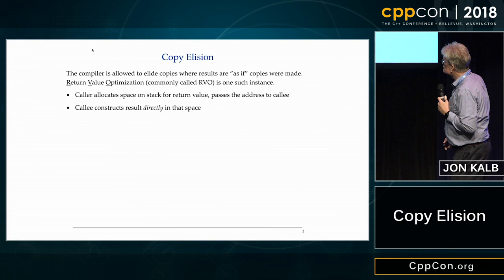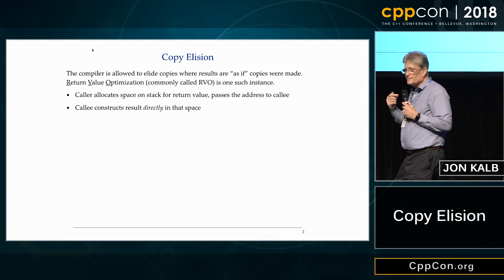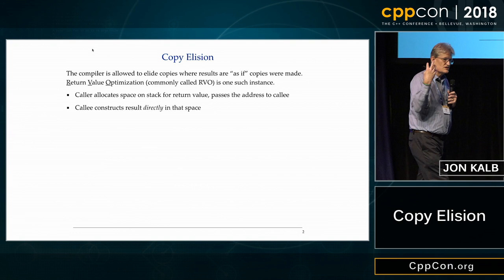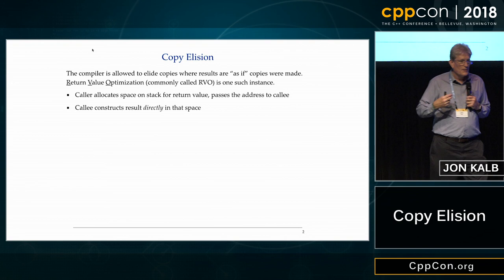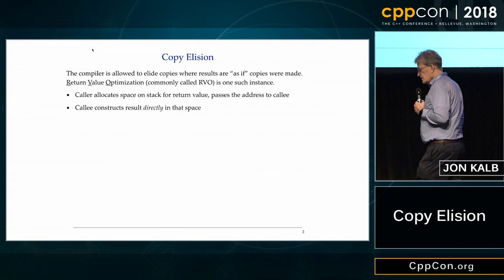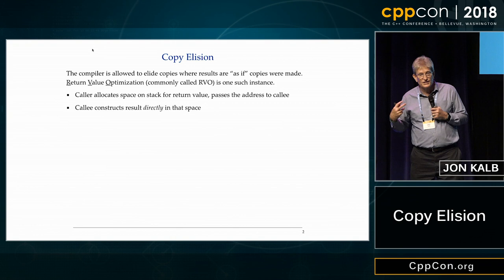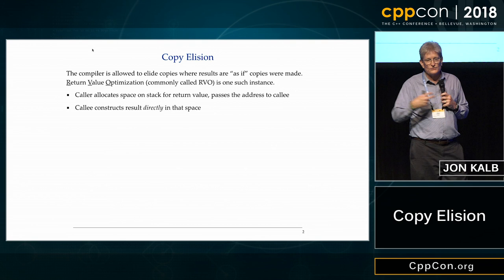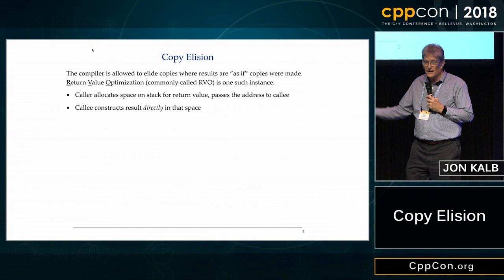Copy elision is based on the fact that the compiler is allowed to follow the as-if rule, which is: the compiler is allowed to generate any code that has the same effect as the code you told it to write. But there's an addition in the standard. The standard actually says that if the compiler is told to copy something, but the copy is not really necessary because the original isn't going to be used again, the compiler is allowed to elide that copy. And you can tell if they've done that if your copy constructor has side effects — and the standard specifically says that your side effects won't happen.